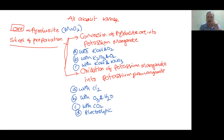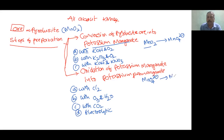In the first step, we get potassium manganate. MnO2 is converted to MnO4²⁻, called manganate. In the second step, MnO4²⁻ is converted into permanganate, MnO4⁻. During this reaction there is a change in oxidation number — an increase in the oxidation number of manganese from +6 to +7. Therefore, this is an oxidation reaction.